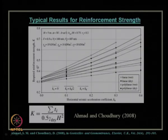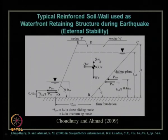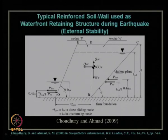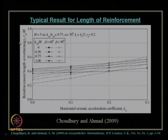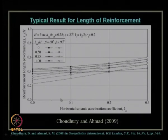We mentioned how to find the required reinforcement strength for internal stability. Based on external stability of that reinforced soil wall in the waterfront — available in Choudhury and Ahmed, Geosynthetics International, IC London — we found how much reinforcement length is required in terms of overturning and sliding modes of failure. Among pull-out, sliding, and overturning, you must provide the maximum length for stability.